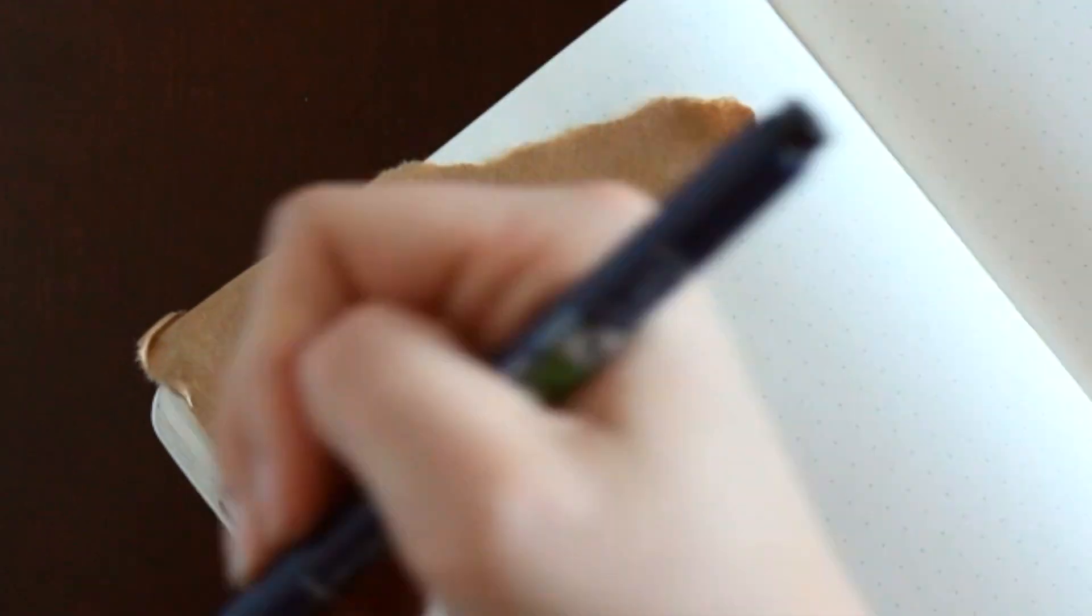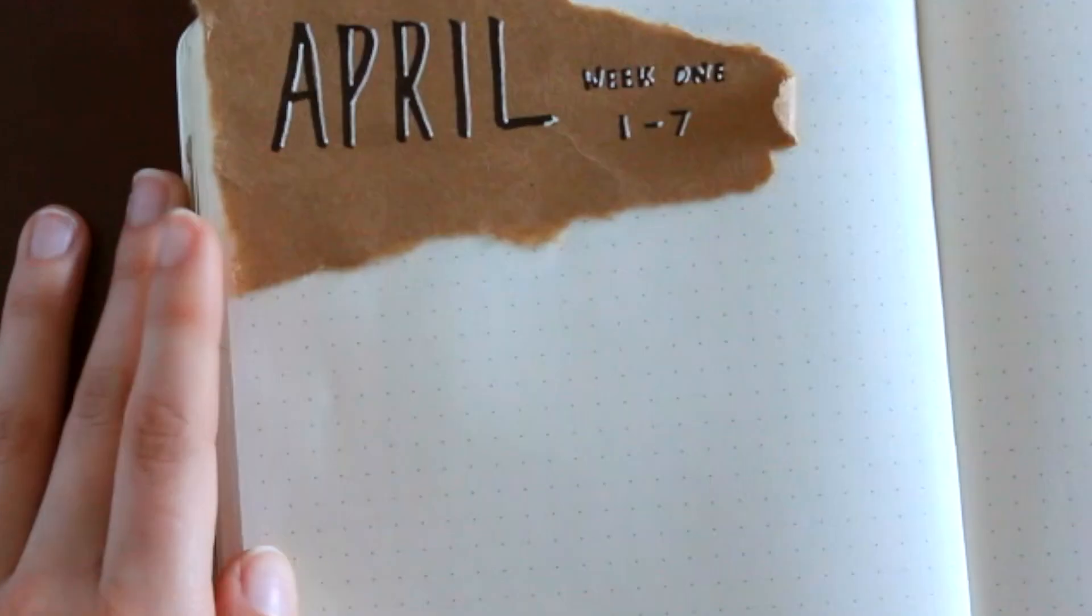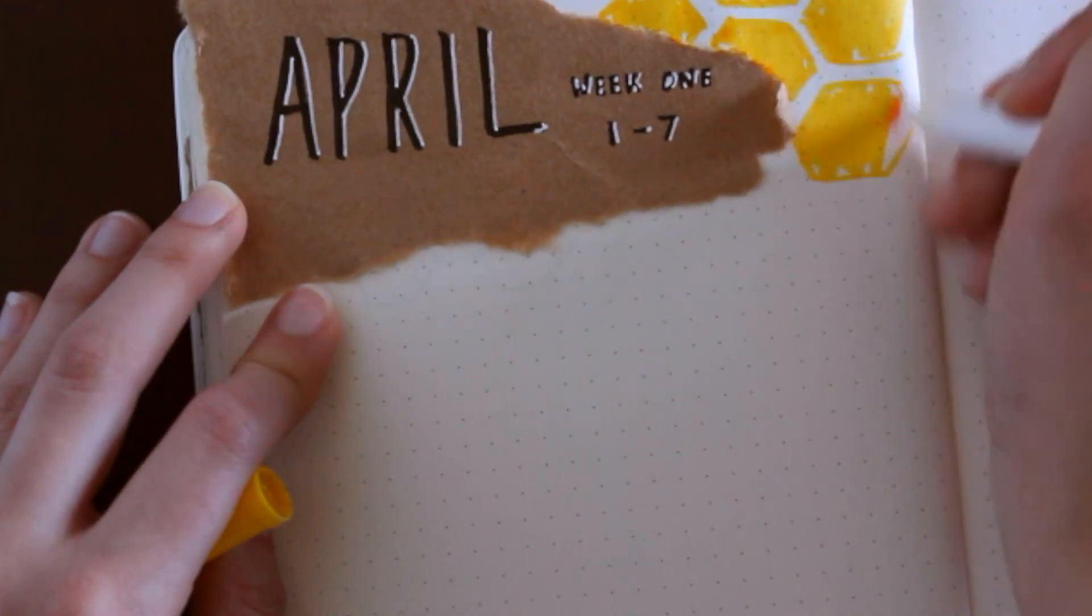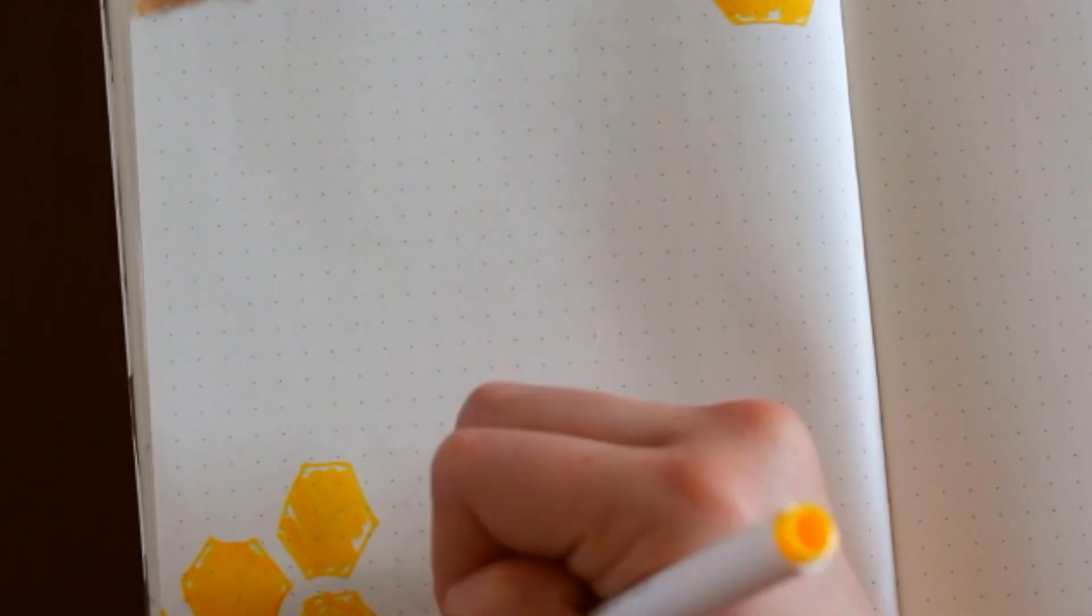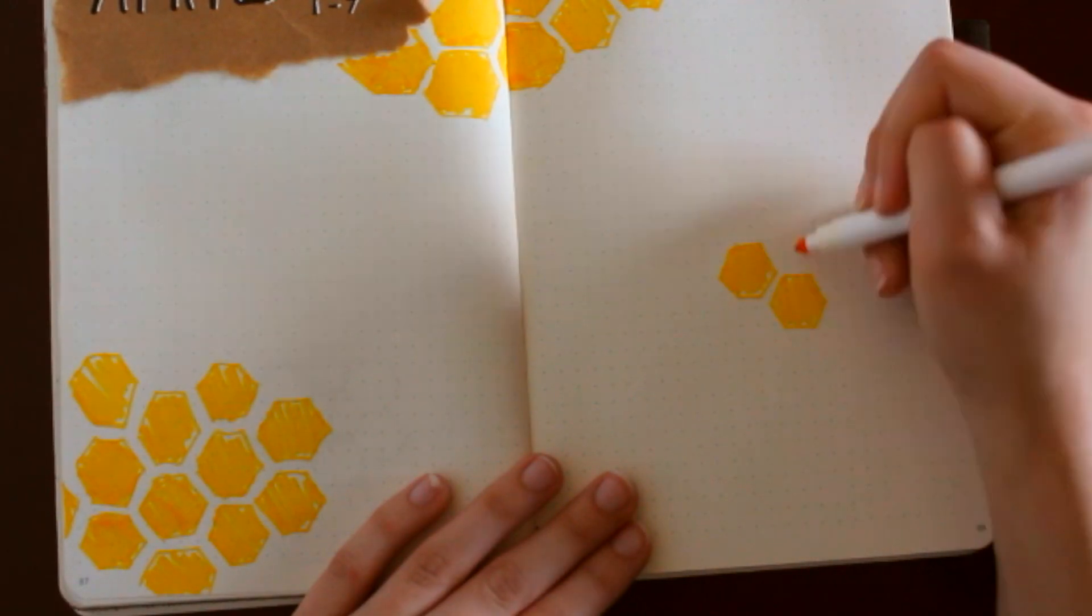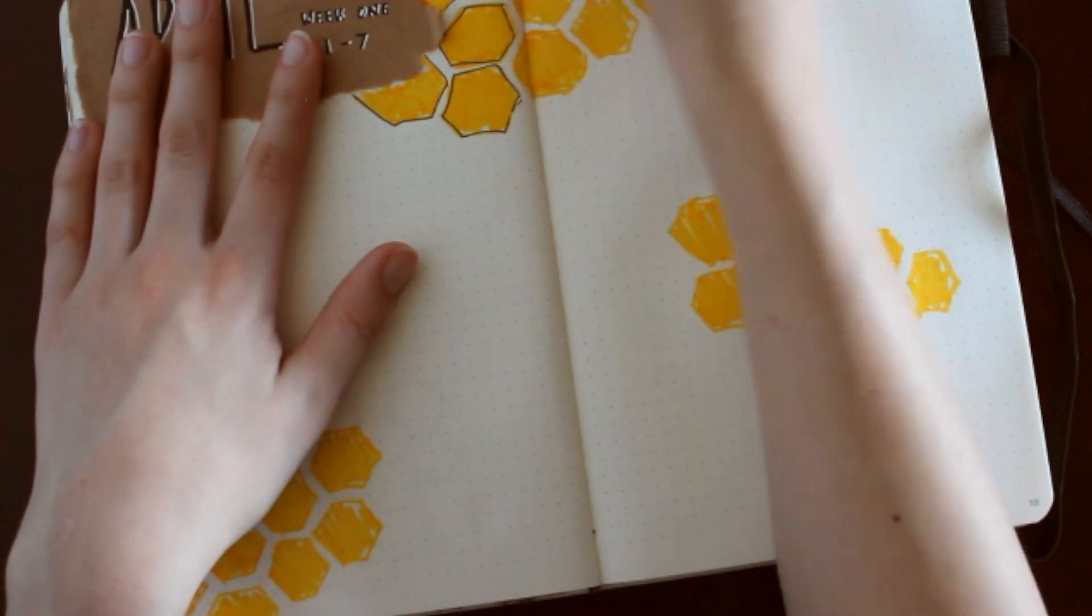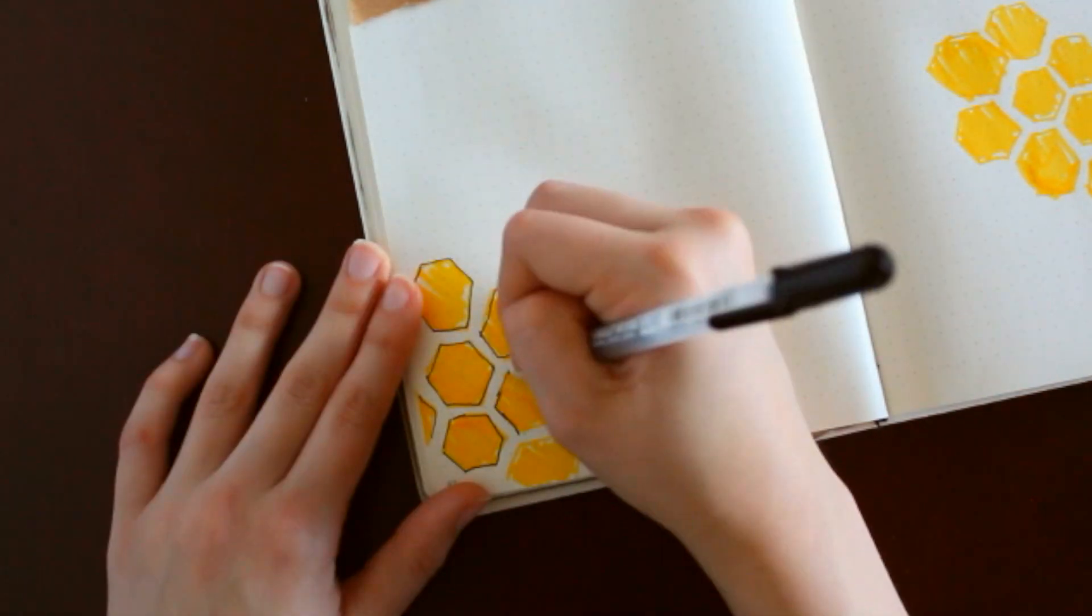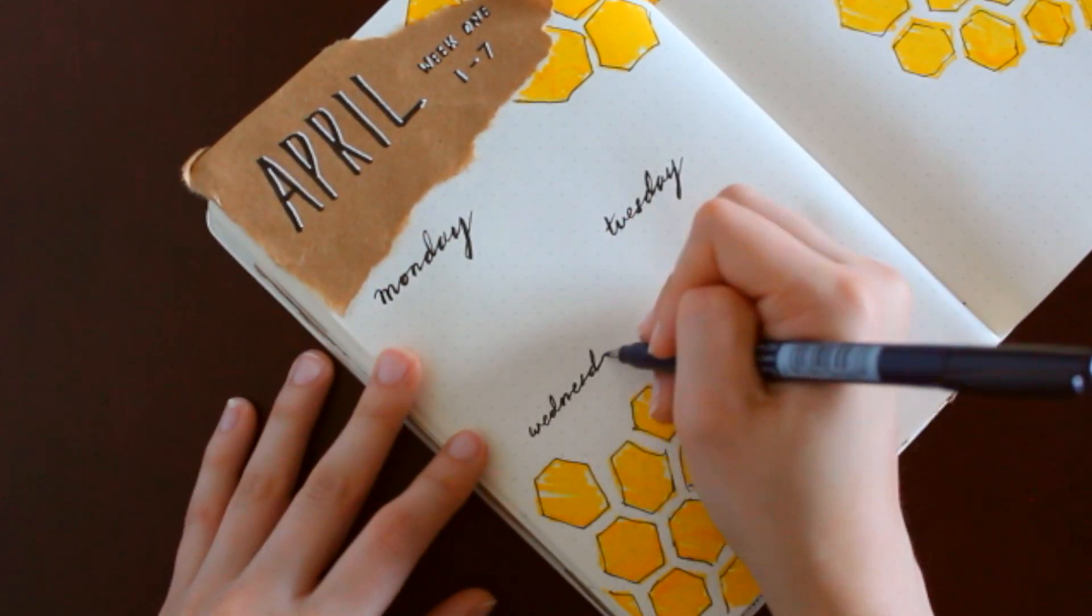So moving on to the very first week of April, I take that brown piece of paper again, and I write in my boxed April with my white drop shadow, and then just the days of the week. I draw in my honeycombs with one of my Crayola super tips, and I outline it with my gel pen. I just write out the days of the week, and that's it for this spread.